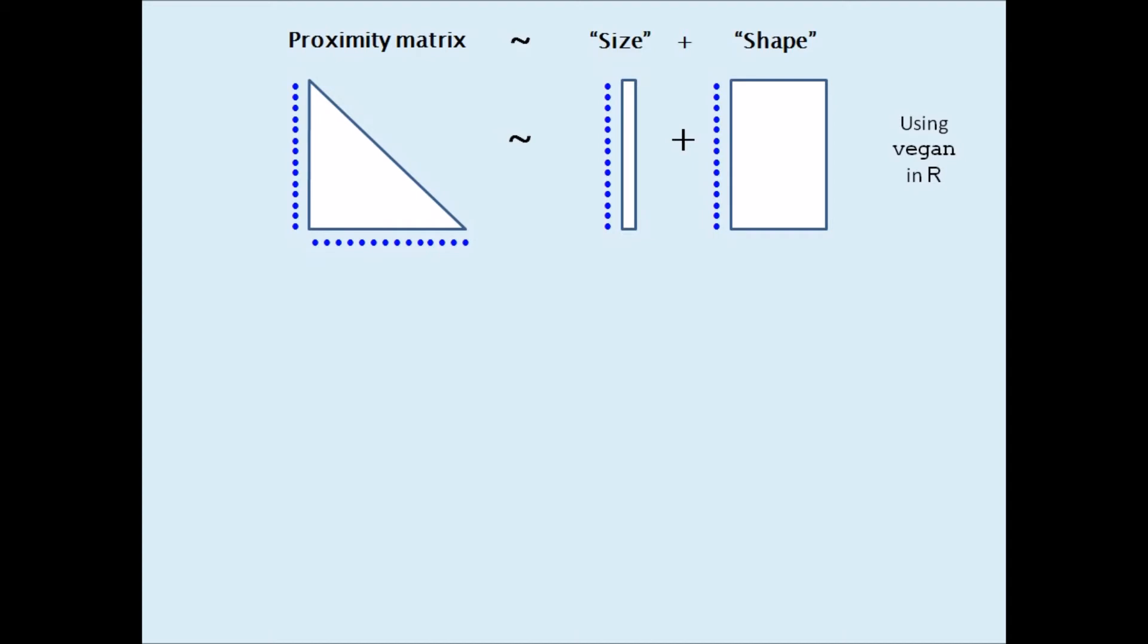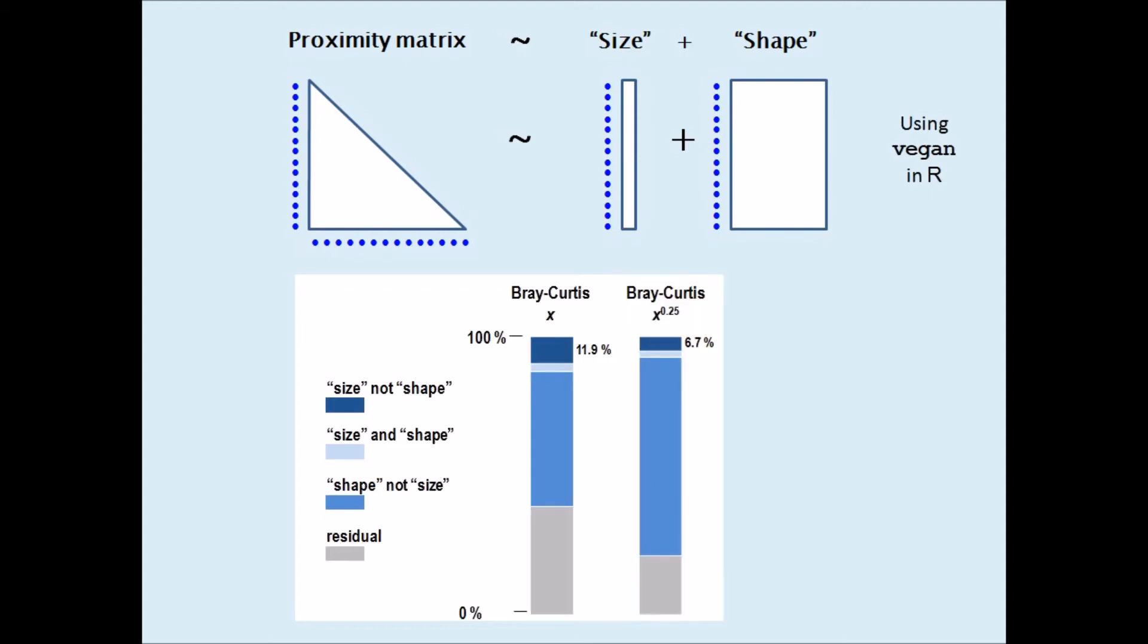For example, using a data set of fish counts at sampling points across the Barents Sea, here are the estimated components summing to 100% of the Bray-Curtis dissimilarity applied to the original abundance counts. From the top there is the part due to size after partialing out shape, then the part confounding both of them in light blue, then the part due to shape after partialing out size, and finally the unexplained residual part. The part due to size is 11.9% of the total Bray-Curtis variance. Since it is customary to apply a root transformation to the counts before computing the Bray-Curtis, the next set of bars shows what happens when the fourth root transformation is applied to the counts.